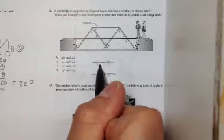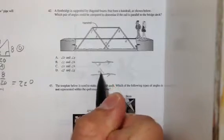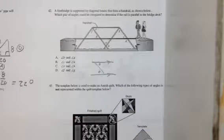We know with parallel lines, the angles that are inside but on the opposite side of the transversal, we call those alternate interior angles and we know that they're equal.